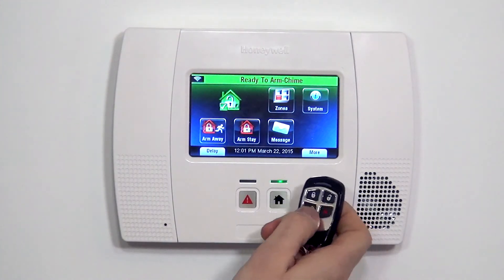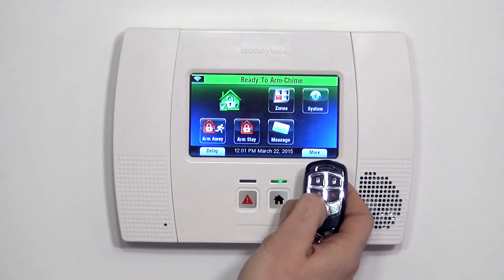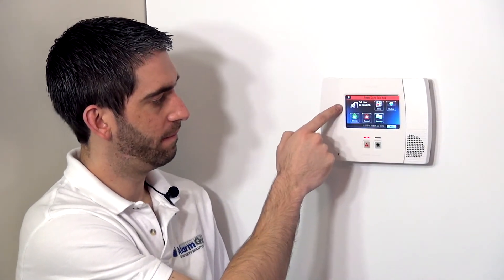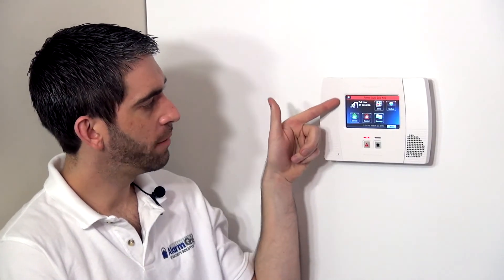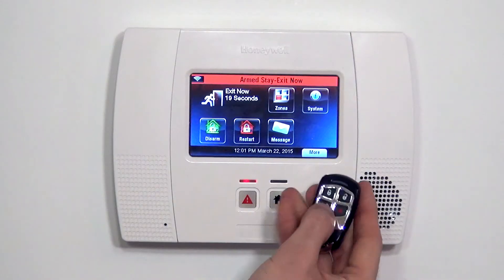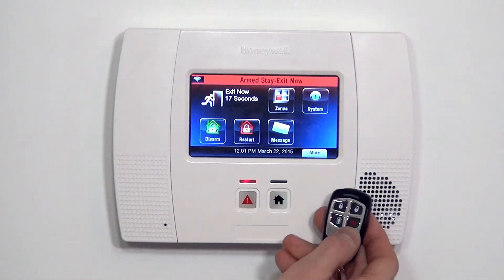Top right button disarms and then we can do bottom left for arm stay. Armed stay. Exit now. You'll notice in arm stay mode, they still give you the exit countdown. They just don't beep every second to alert you because they know by arming to stay, some people are in the house and therefore some people can still leave. That's why there's still the exit delay. Everybody else that's in the house doesn't have to hear it beeping every second for the exit period.